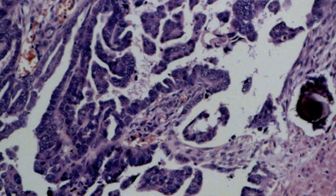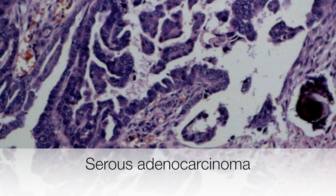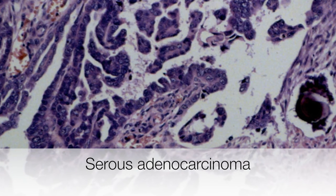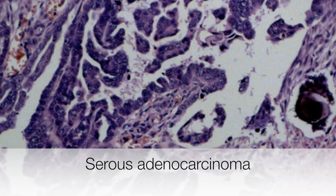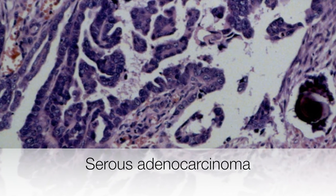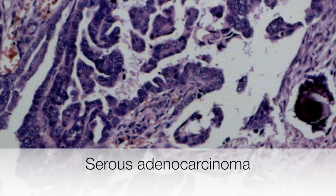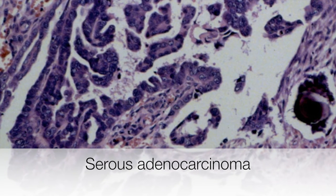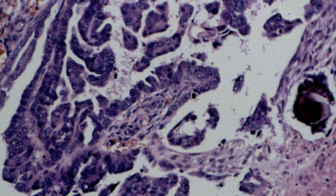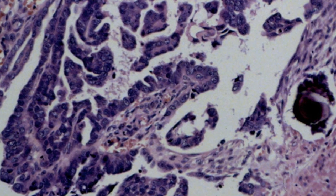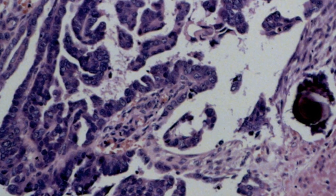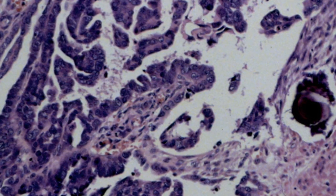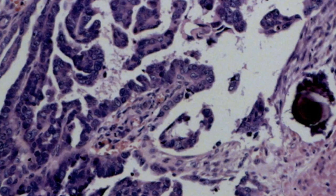This is the histological appearance of a serous adenocarcinoma of the endometrium, very similar to serous adenocarcinomas of the ovary or peritoneum. The tumour cells are high-grade and pleomorphic, forming papillae, and in many cases psammoma bodies can be seen. In fact, on the right side of the picture, there is a psammoma body.